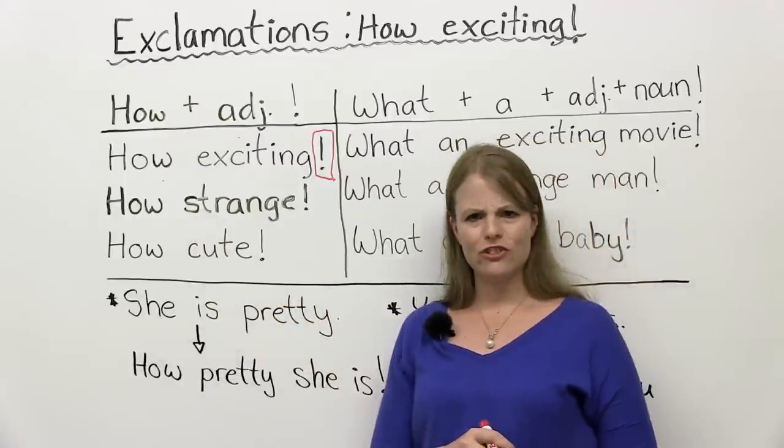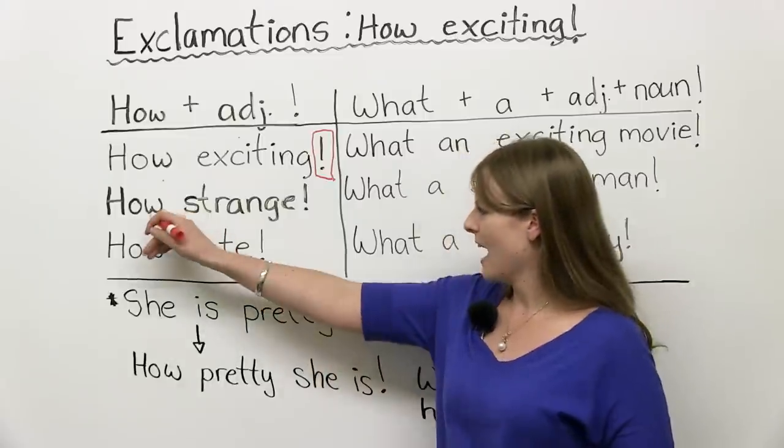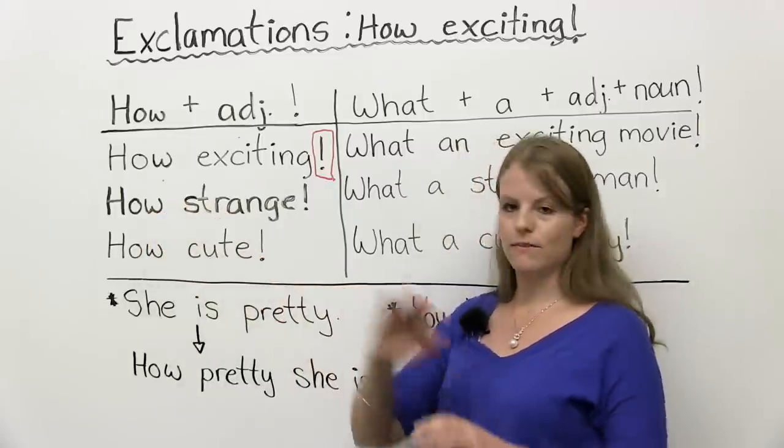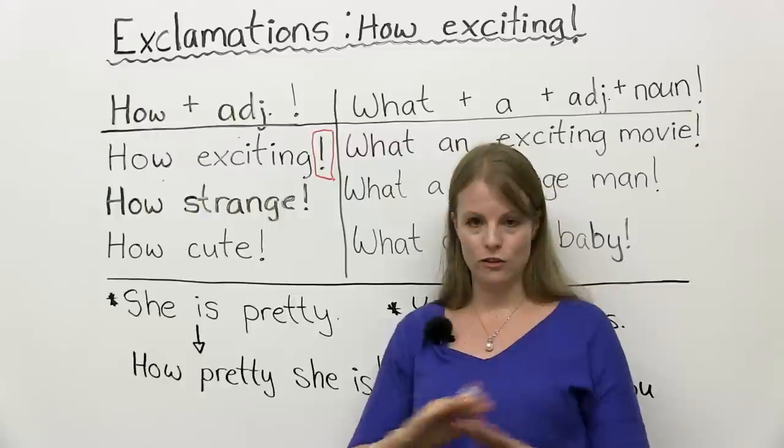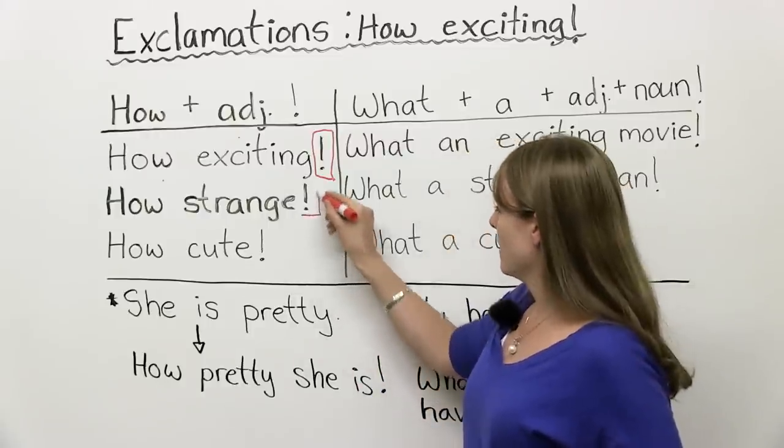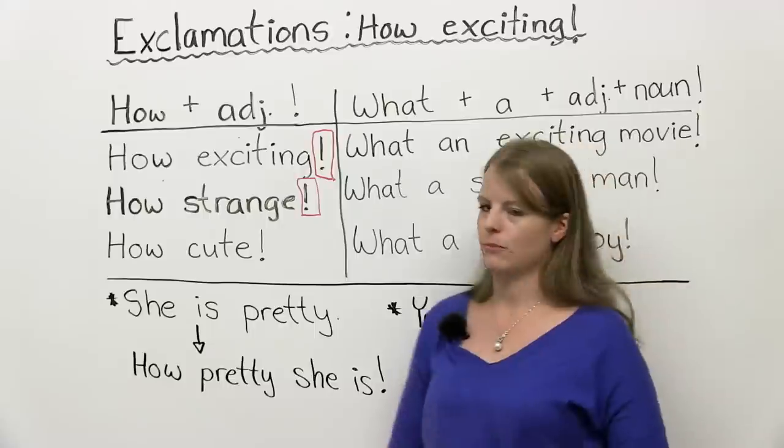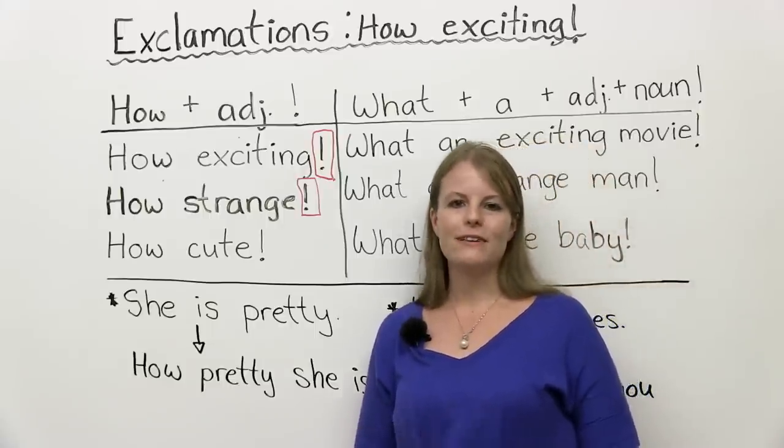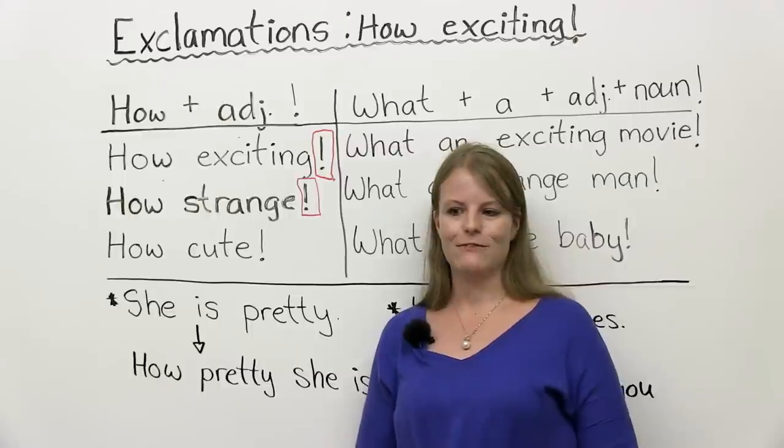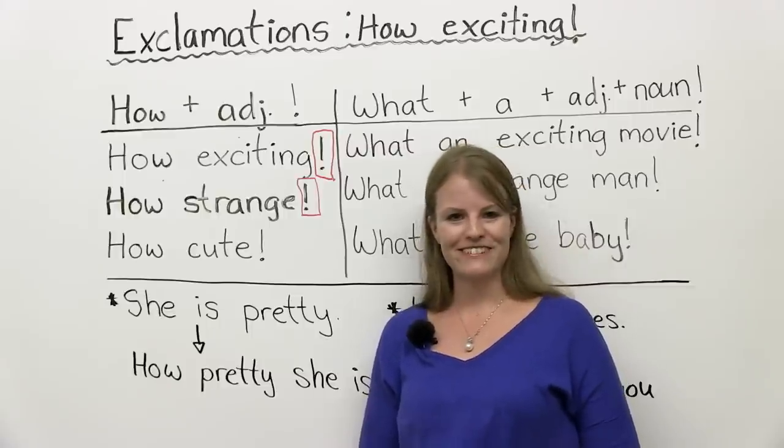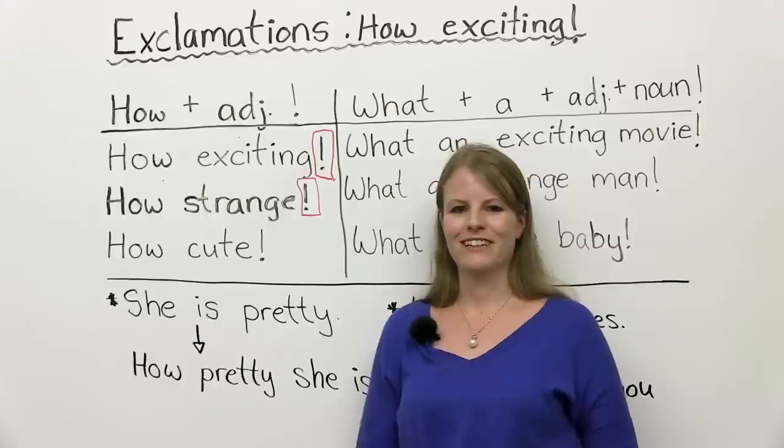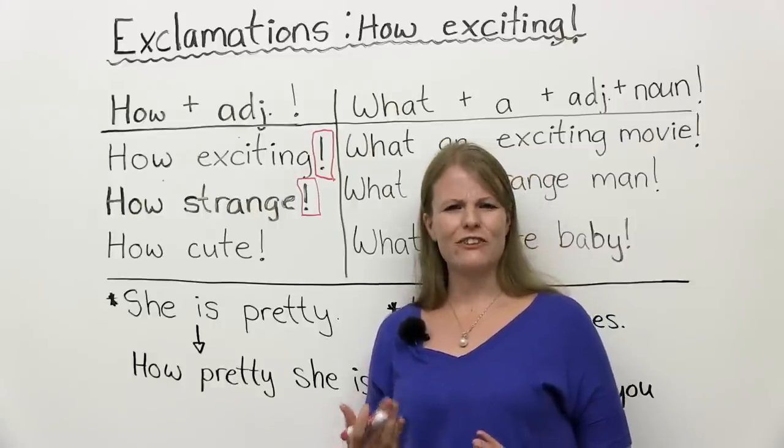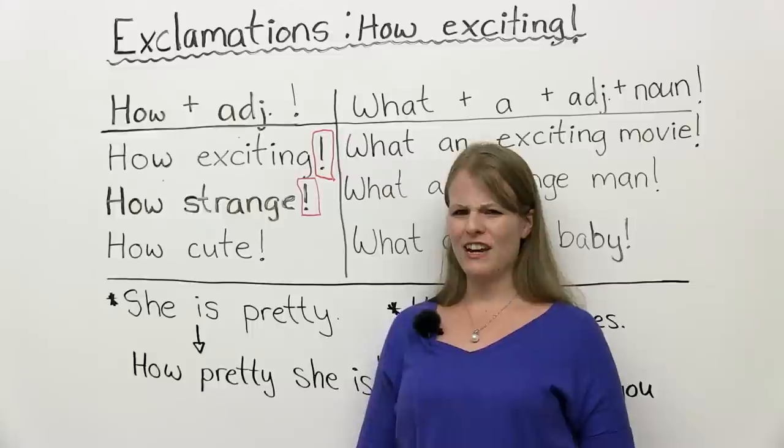How strange. So again, how plus an adjective. There is no verb. And we have, again, our exclamation mark. How strange. Maybe you would say this if you saw a haunted house. Or a weird man. Or you saw someone doing something very strange, you would say, how strange.